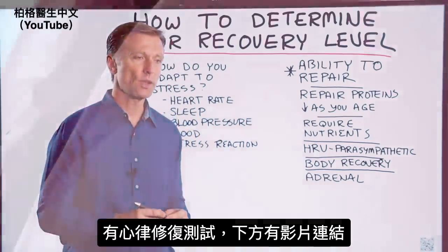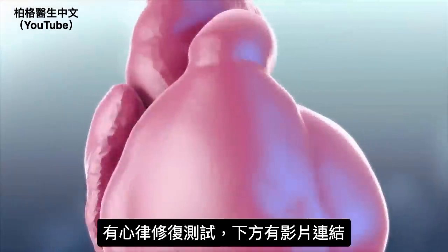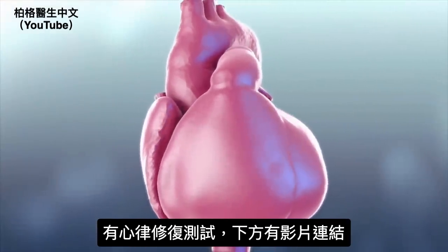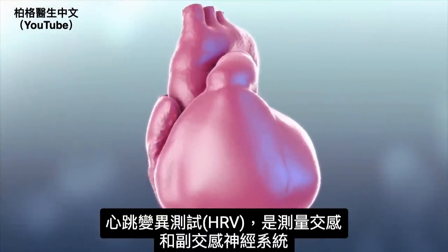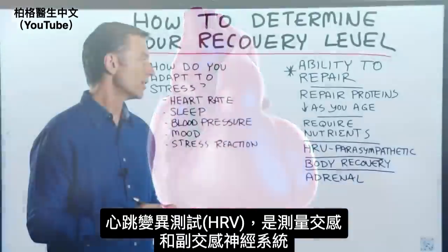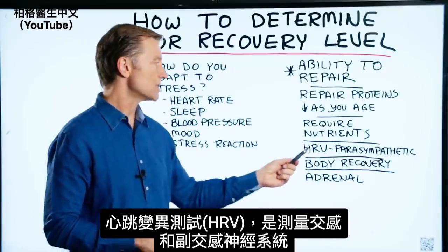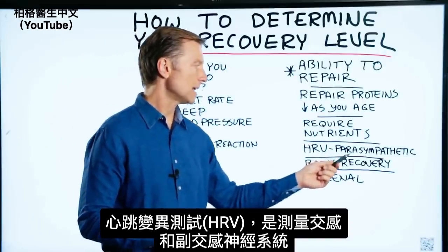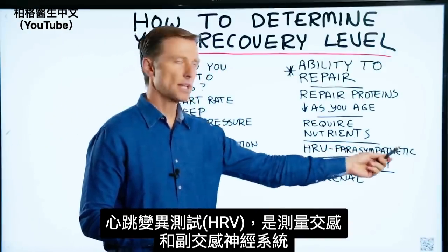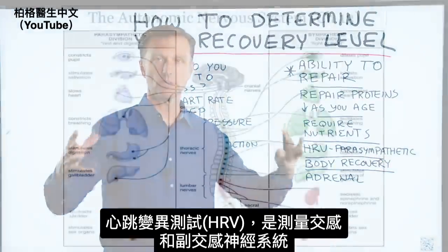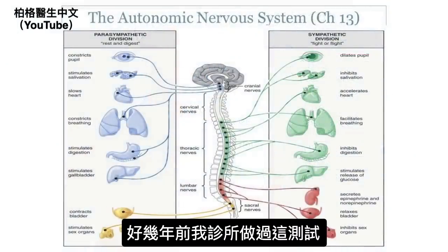There's heart rate recovery testing — I did a video on that. There's also a test called heart rate variability, which measures the sympathetic and parasympathetic parts of the nervous system, which is the autonomic nervous system.